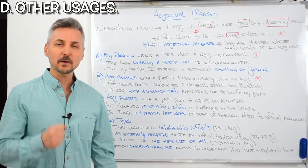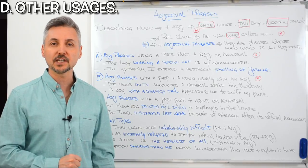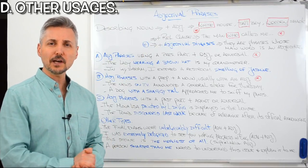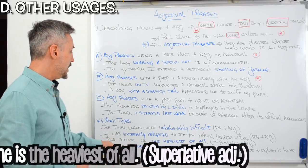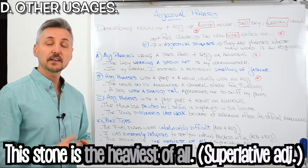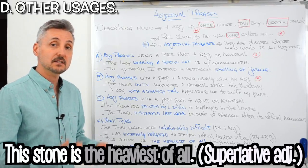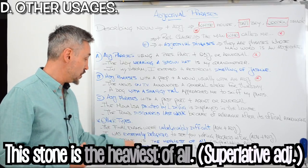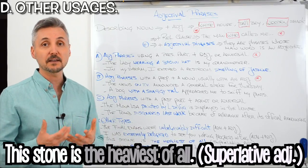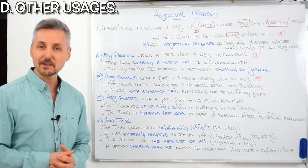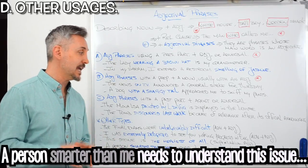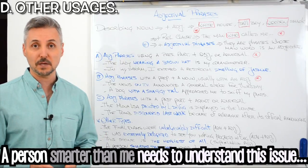We can also use superlative or comparative adjectives in adjectival phrases. For example: This stone is the heaviest of all — the heaviest of all is a superlative adjective describing the stone. With comparative adjectives: A person smarter than me needs to understand this issue and explain it to me.